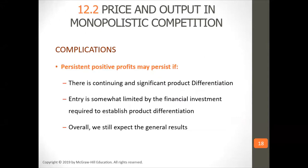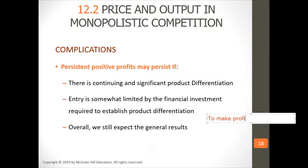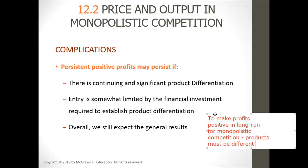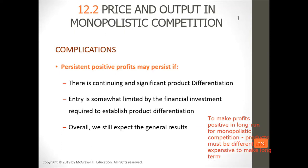Positive profits can happen over the long term if there's constant product differentiation — if products are constantly different, profits can be positive in the long run. There also needs to be a high amount of investment to allow for product differentiation. To maintain positive profits in the long run in monopolistic competition, products must be different and expensive to make long-term. You must have both of those conditions to make it work.